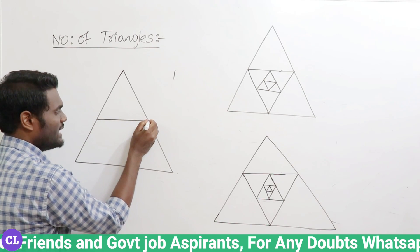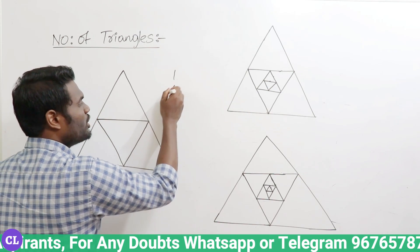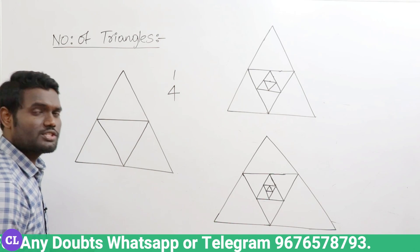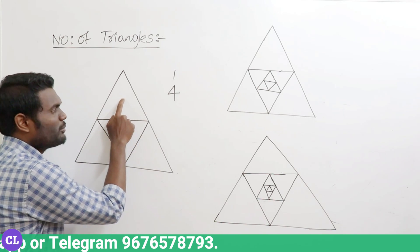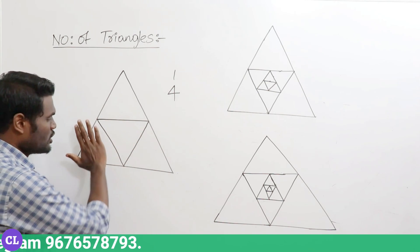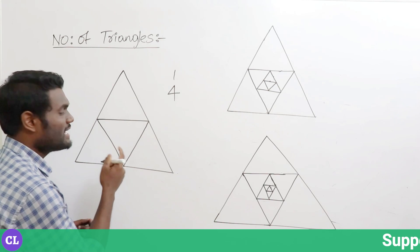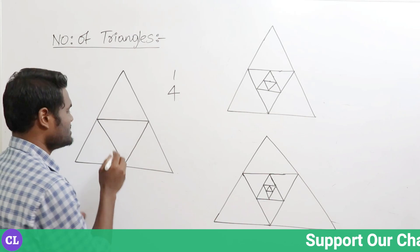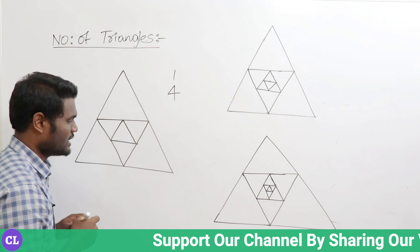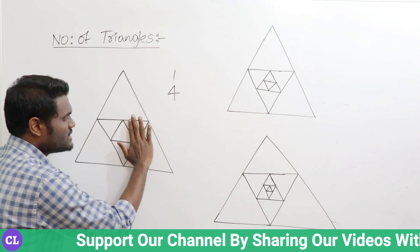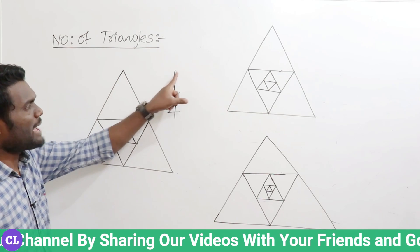Now if I insert one more new triangle inside this particular figure, I am going to have four extra triangles. Observe here: this is one triangle, this is one more triangle, this is one more triangle, and this is one more triangle — so total four extra triangles. Similarly, if I insert one more new triangle inside, I am going to get four more extra. So for one big triangle I write one; if I insert one new triangle I get four extra.